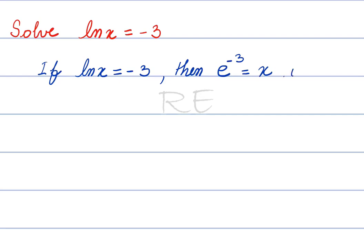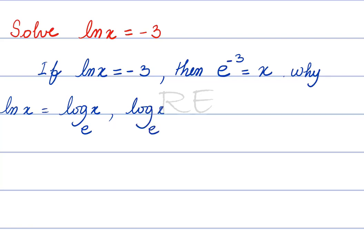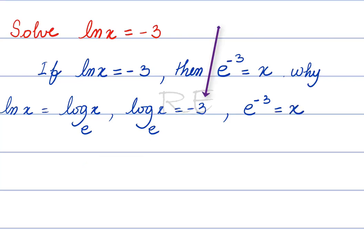Why? Well, we need to remember that the natural log of x is actually log base e of x. Therefore, the equation is log base e of x is equal to negative three. Log is an exponent, meaning the base e to the negative three is equal to x.